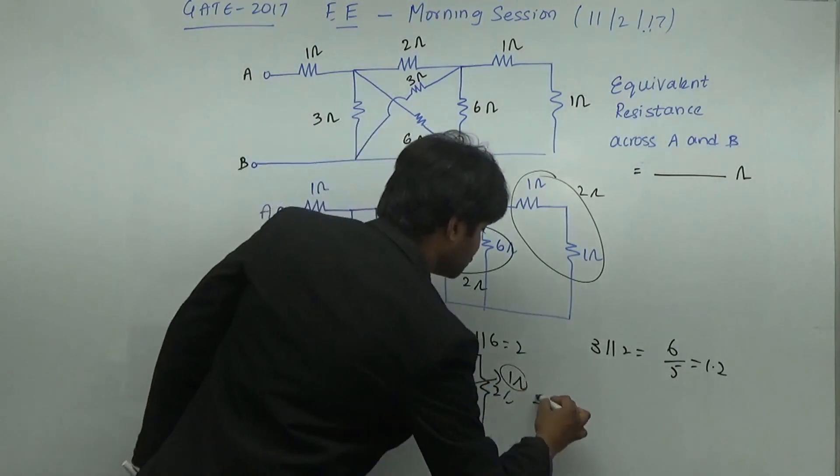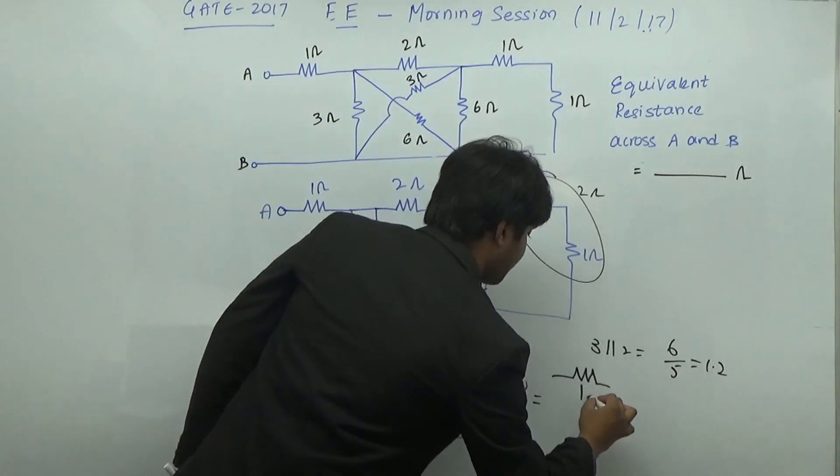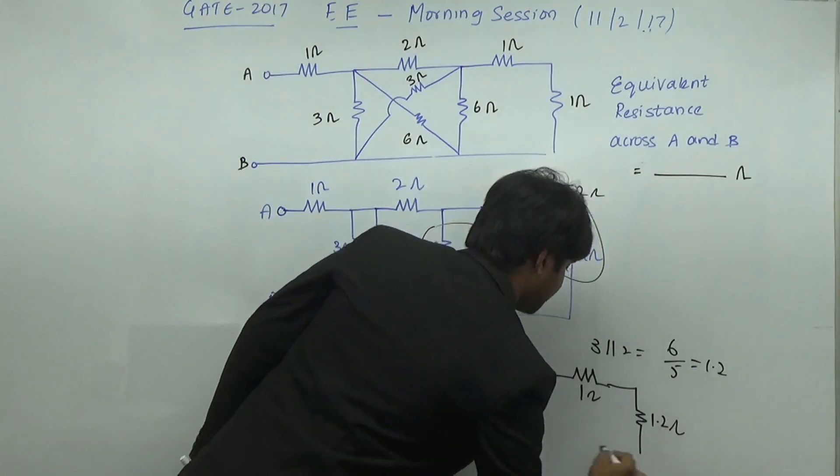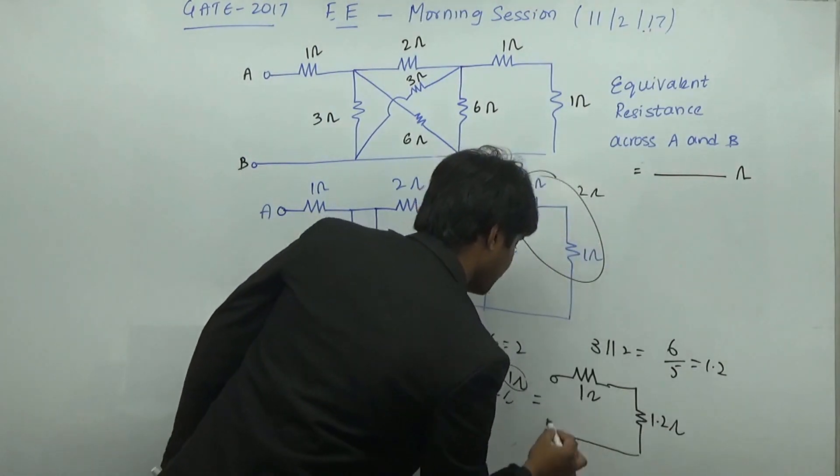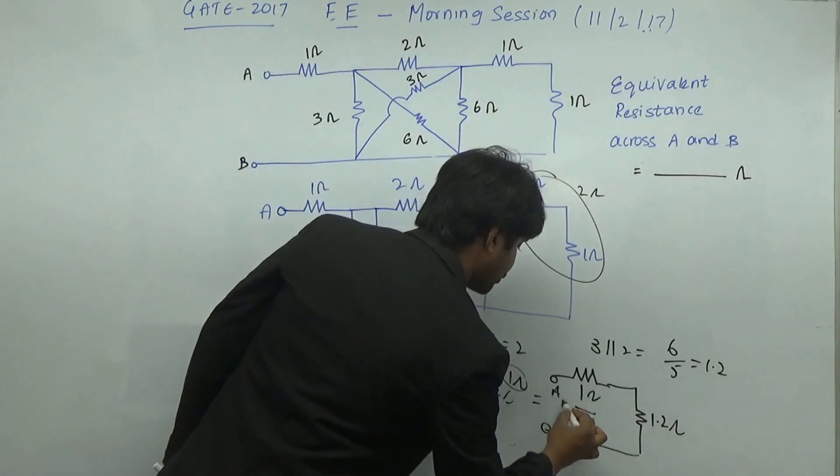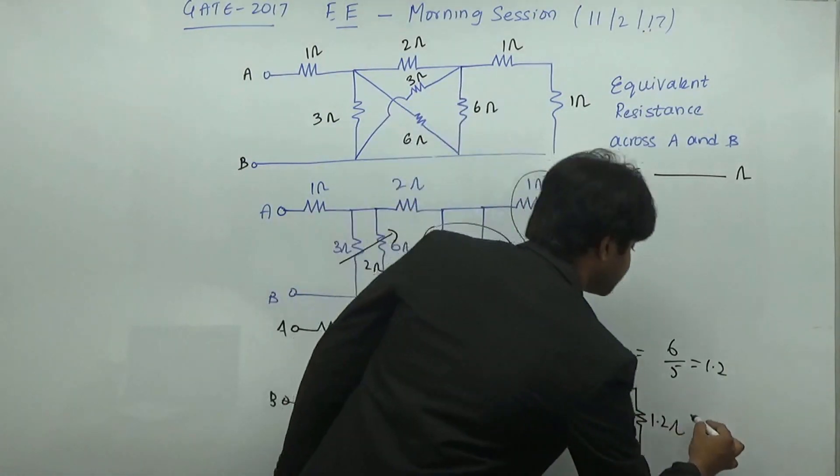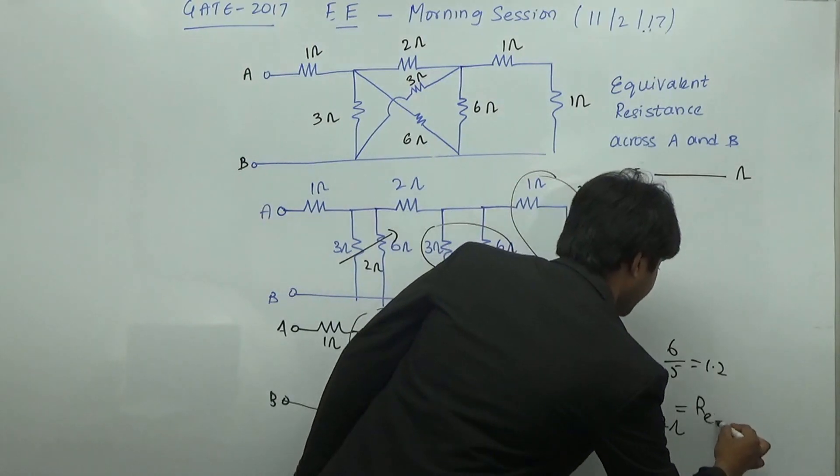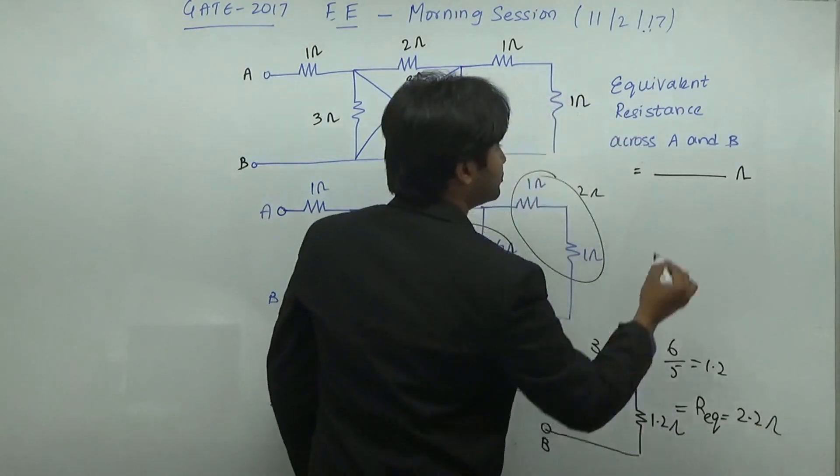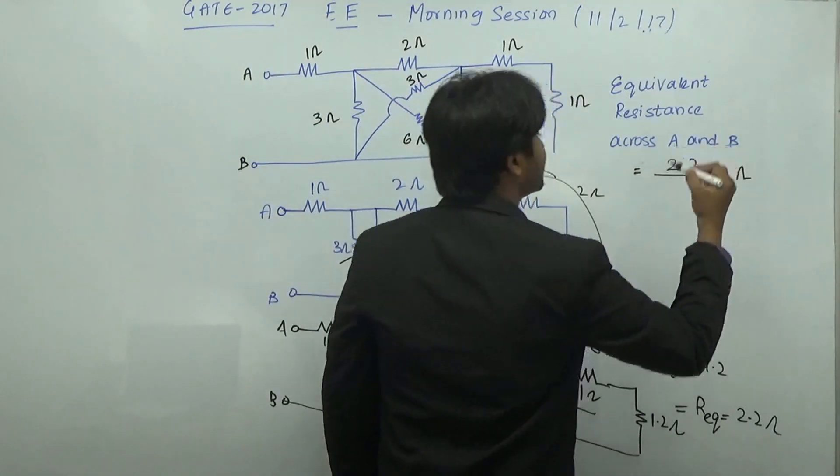So now this is going to be 1 ohm plus 1.2 ohms. So the total resistance is nothing but 1 plus 1.2. So the resistance is equal to 1 plus 1.2, it is 2.2 ohms. So you have to just write 2.2 as an answer.